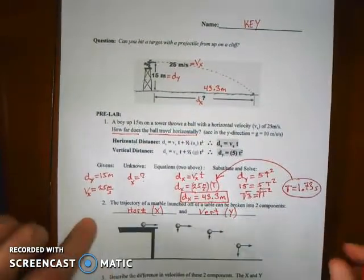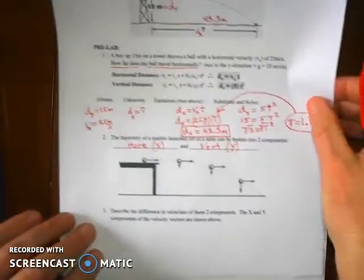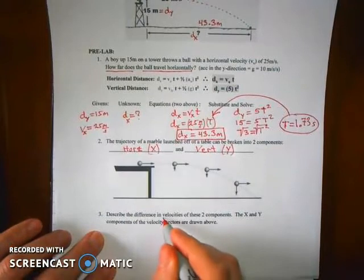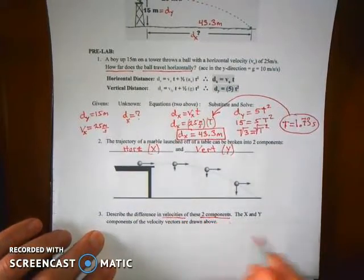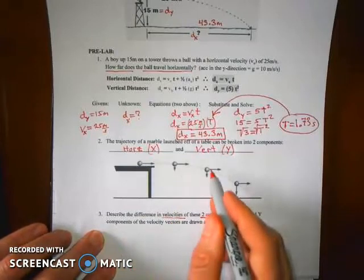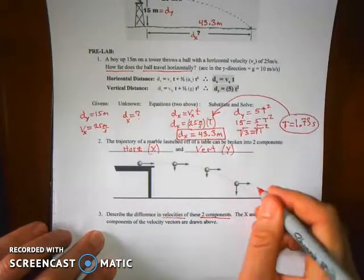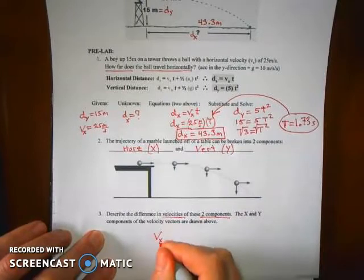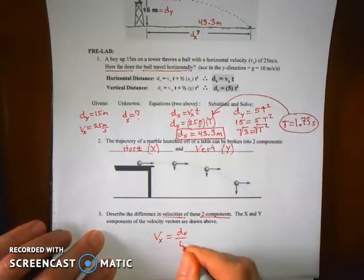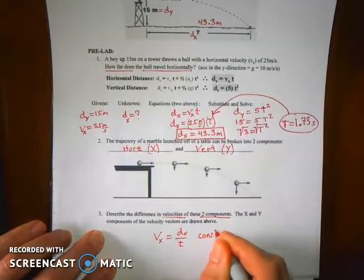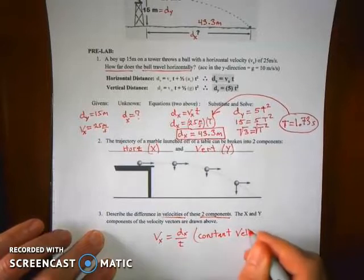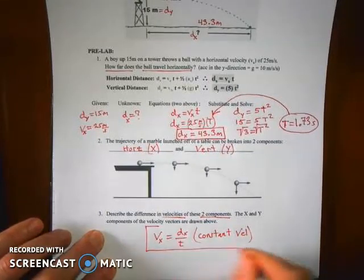And if you want to, last question, describe the differences in the velocities of these two components. The x and y components of velocity vectors are drawn above. Remember we talked about this? Well, the velocity in the x direction is simply equal to the distance in the x direction divided by time, and it's constant. There is a constant velocity. And that's only true in the x direction.